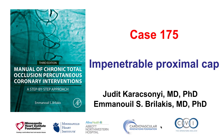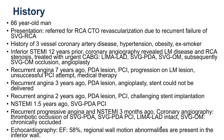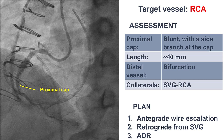Hi, this is Judith Karakson and Yermanos Brilakis, and this is case 175 for the Manual of CTO Interventions. This is a case illustrating potential solutions to the impenetrable proximal cap. The patient had previous coronary bypass and presented with recurrent failure of a saphenous vein graft to the right posterior descending artery. The referral was to recanalize the native coronary artery CTO.